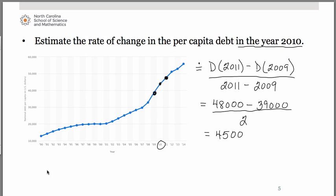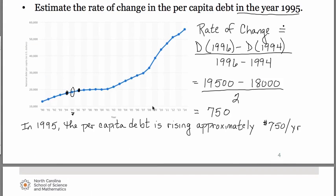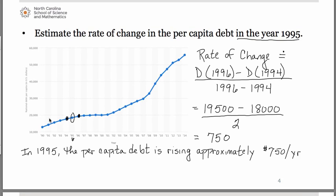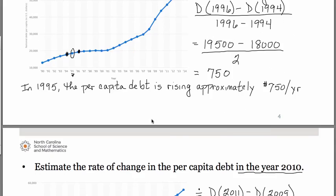Notice what's happening at the year 2010 — notice how steep it is there on the graph. If we go back to the other one, notice how much more flat it is. That's what's accounting for that difference in the slope.